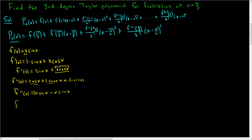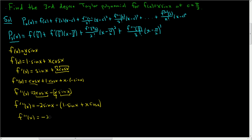One more derivative. For f triple prime of x, the derivative of 2 cosine x is negative 2 sine x. Then for the minus x sine x term, we apply the product rule: minus parentheses, derivative of x is 1 times sine x, plus x times the derivative of sine which is cosine x. Combining the sine terms: negative 2 sine x minus sine x gives negative 3 sine x. So f triple prime of x equals negative 3 sine x minus x cosine x.